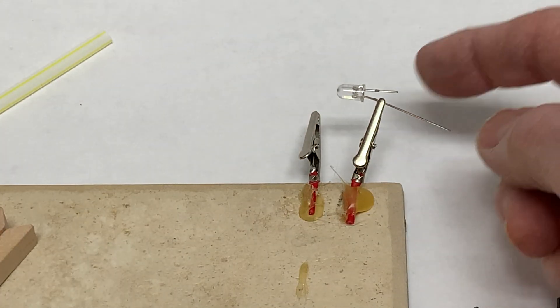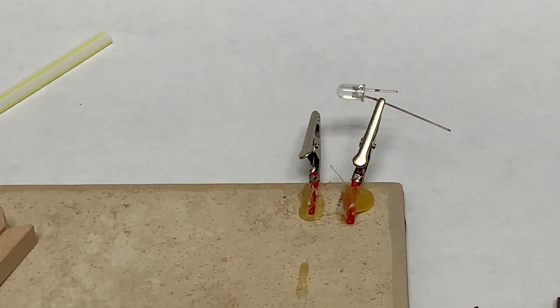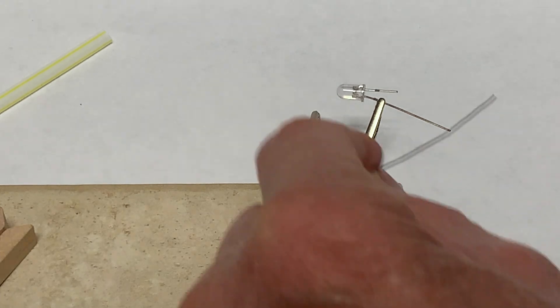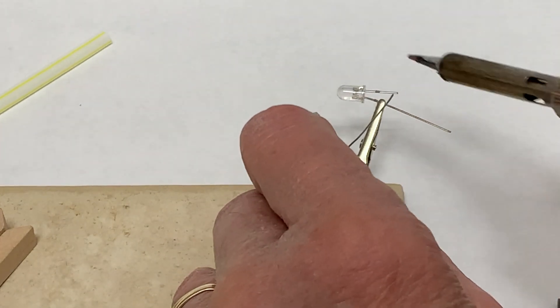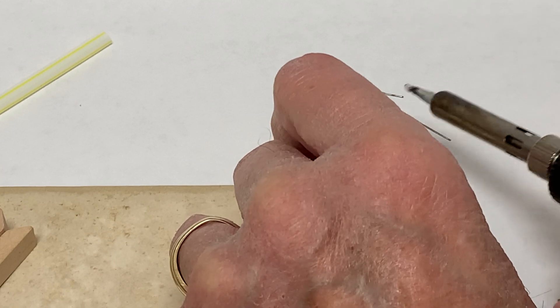I cut down the negative terminal, negative lead, to a little bit, and I'm going to tin that, just get a little blob of solder.